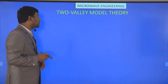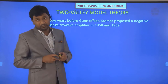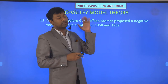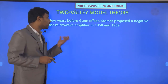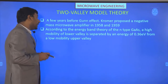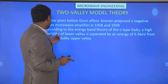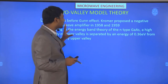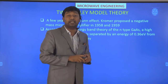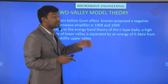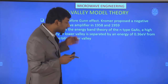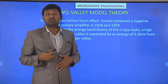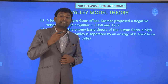Starting with the two-valley model theory: a few years before the Gunn effect, Kromer proposed a negative mass microwave amplifier in 1958 and 1959. According to the energy band theory of n-type gallium arsenide, a high-mobility lower valley is separated by an energy of 0.36 electron volts from a low-mobility upper valley. Three-five semiconductor devices are used to generate negative resistance properties, and such devices are called active devices.